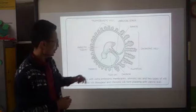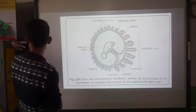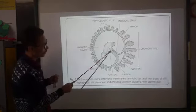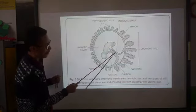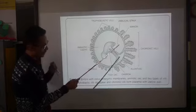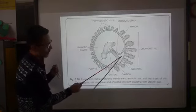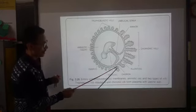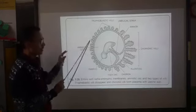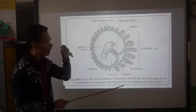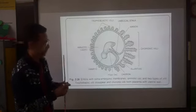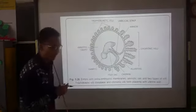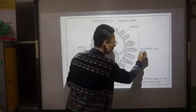Looking at the diagram, we can see the developing embryo and the umbilical cord. We also find the allantois and the chorion. For now, mainly focus on two particular terms: trophoblastic villi and the chorionic villi.